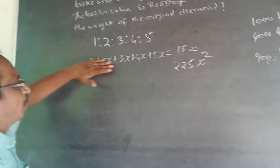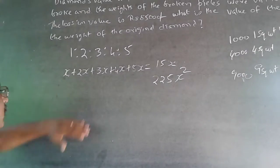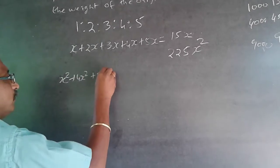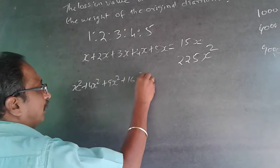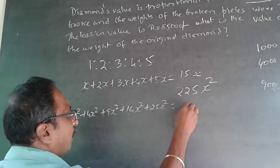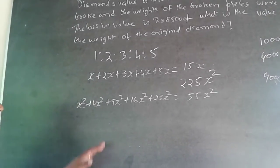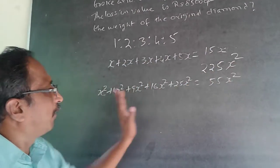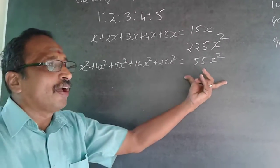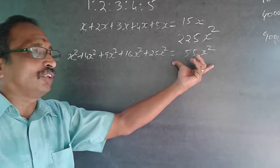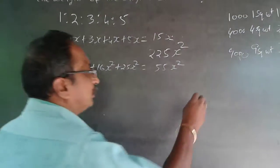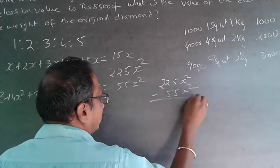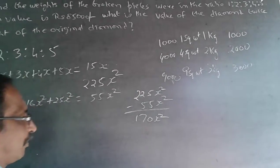Now I find the sum of the square weights of the broken pieces: x² + 4x² + 9x² + 16x² + 25x² = 55x². The original square weight was 225x², whereas the combined square weight of the broken pieces is only 55x². So there is a loss in square weight of 225x² − 55x² = 170x².